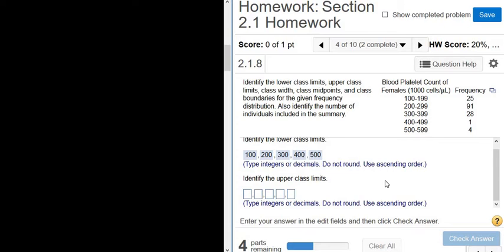Now, what's the upper class limits? So those are these numbers here, 199, 299, etc. These are the biggest numbers that fit in the class. The lower class limits are the smallest number that fit in each class. So for example, for the first class, the smallest number that fits in there is 100, and the biggest number is 199.